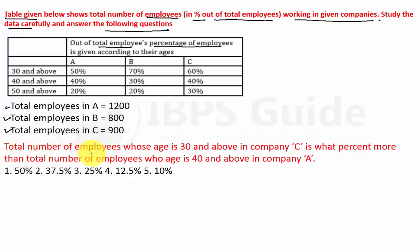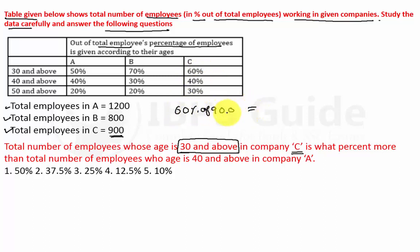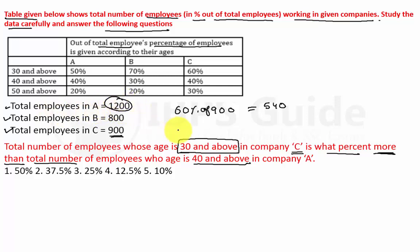Question 1: The total number of employees whose age is 30 and above in Company C — 60% of 900. 10% of 900 is 90, so 60% will be 540. This is what percent more than the total number of employees whose age is 40 and above in Company A? 40% of 1200 — 10% is 120, so 40% will be 480. The difference is 60 more.